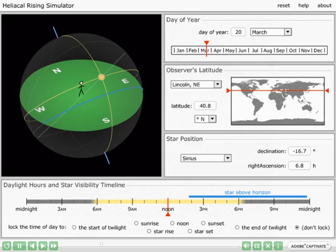The panels provided for controlling the date, observer's latitude, and the coordinates of the star in question are straightforward to use. The bottom panel of the simulator displays a timeline where daytime hours are colored yellow and night hours dark gray.